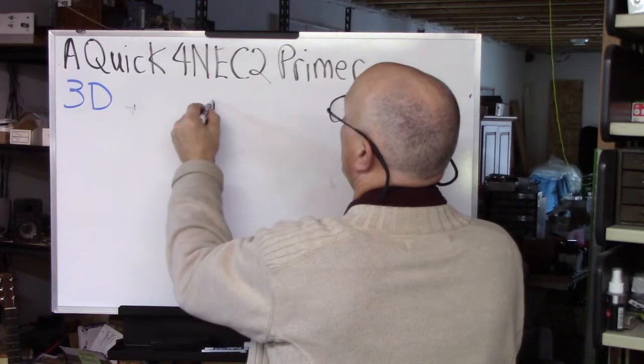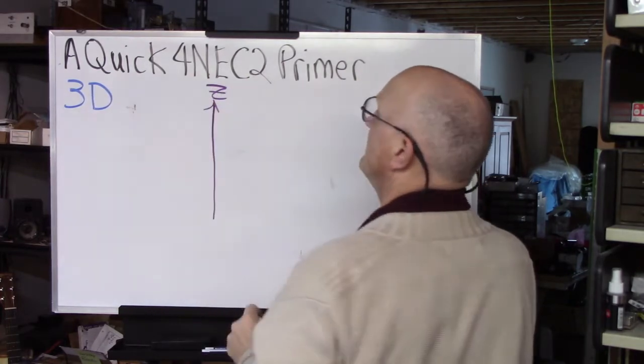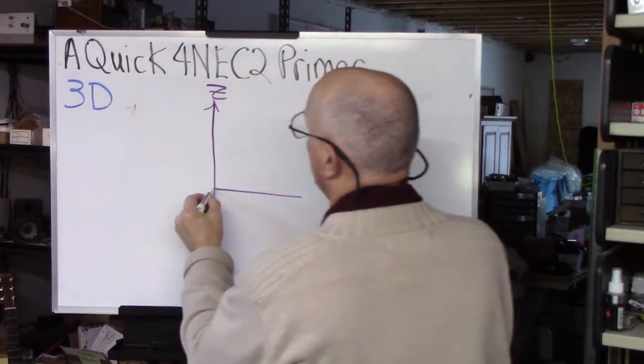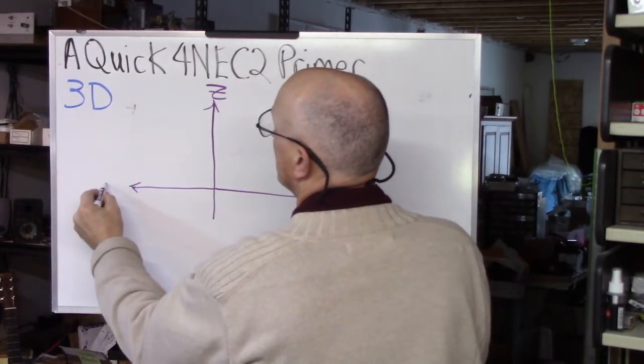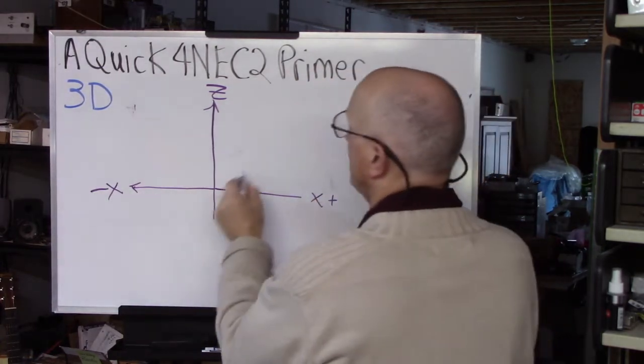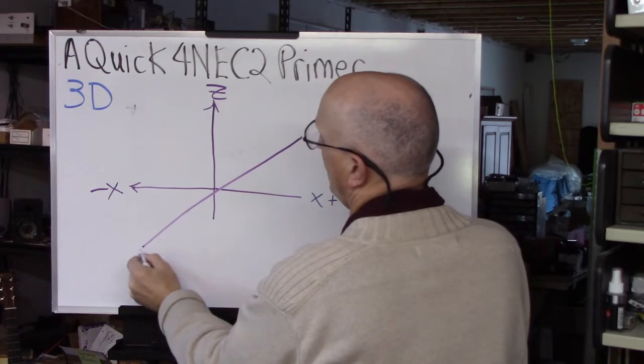You have your Z which is the distance above ground. You have the X direction. That's minus X. This is plus X.